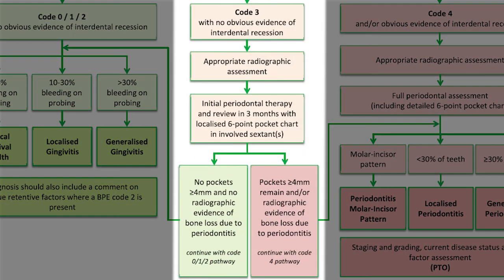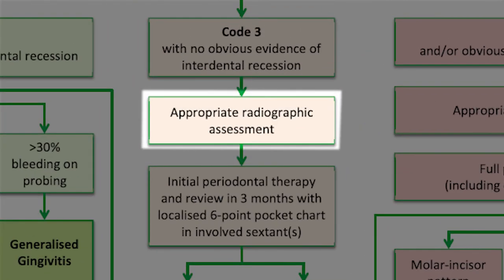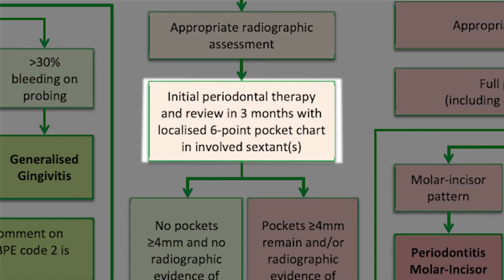Let's start with code threes only — no code fours. You start by taking radiographs in the sextants with scores of three to assess if there's any bone loss in those areas. You will then do an initial periodontal therapy, which is a combination of good supragingival scaling and oral hygiene instructions, and then wait eight to twelve weeks for the inflammation to cool down. This will reduce any false pocketing, and if it was real pocketing, sometimes just good oral hygiene is enough to close the pocket.